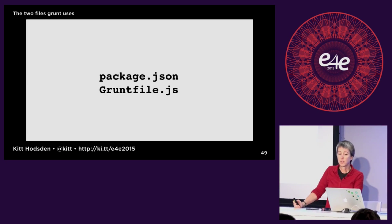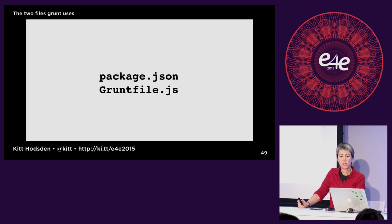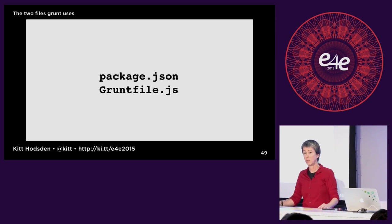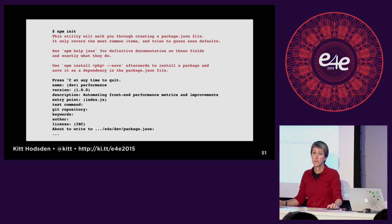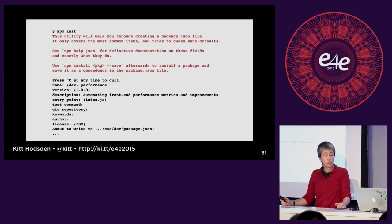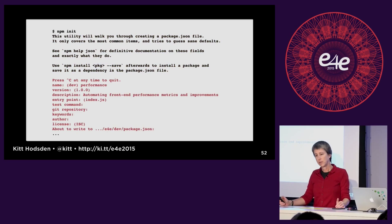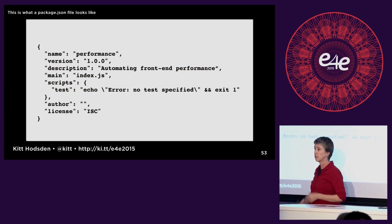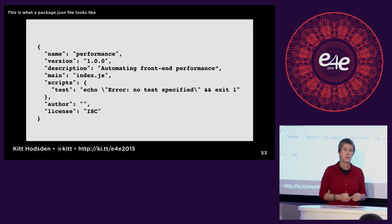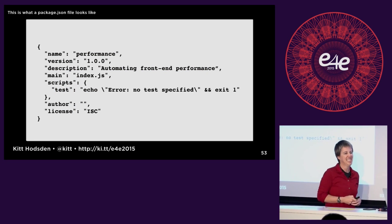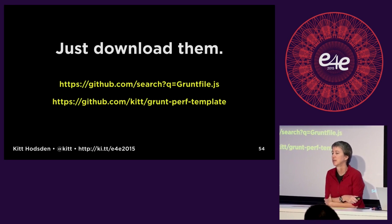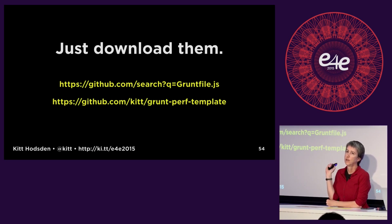Grunt needs two files to work: the package.json and the gruntfile.js. There are a number of ways to create these. To create a package.json, you can do `npm init` on the command line, which gives you a bunch of questions to answer and produces a JSON file. I say fooey to all that — just download what someone else has already done. It makes it a lot easier and quicker, and I've already done one for you.